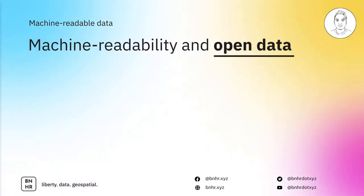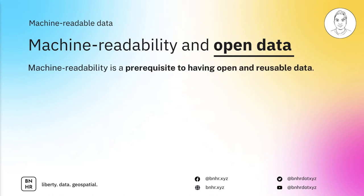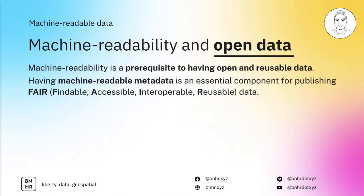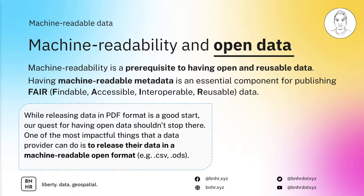In fact, I've given this same exercise to different groups of people in my data literacy training events, and the groups with the spreadsheet were always faster and more accurate than the ones with the PDF. Second, machine readability is crucial to having open and reusable data. In addition to that, machine-readable metadata is an essential component for publishing FAIR — findable, accessible, interoperable, reusable — data. While releasing data in PDF format is a good start, our quest for having open data shouldn't stop there. One of the most impactful things that a data provider can do is to release their data in a machine-readable open format such as a CSV or a .ODS file.